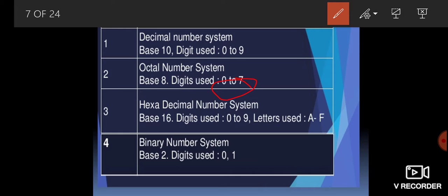In the hexadecimal number system, the base is 16 and the digits used are 0 to 9 plus letters A to F. For digits 0 to 9, we use those same digits. For 10 we write A, for 11 we write B, for 12 we write C, and similarly up to F which represents 15.